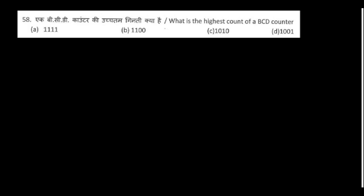What is the highest count of a BCD counter? BCD stands for Binary Coded Decimal. The count goes from 0 to 9, and 9 in BCD is 1001. So option D is the right answer.